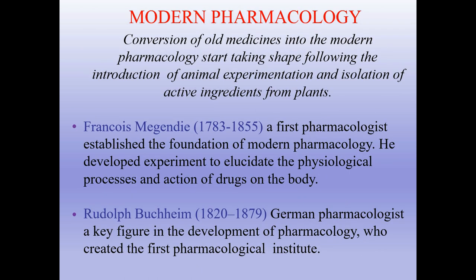Modern pharmacology: conversion of old medicines into modern pharmacology started taking shape following the introduction of animal experimentation and isolation of active ingredients from plants. François Magendie, the first pharmacologist, established the foundation of modern pharmacology and developed experiments to elucidate physiological processes and the action of drugs on the body. Rudolf Buchheim, a German pharmacologist, was a key figure in the development of pharmacology who created the first pharmacological institute.